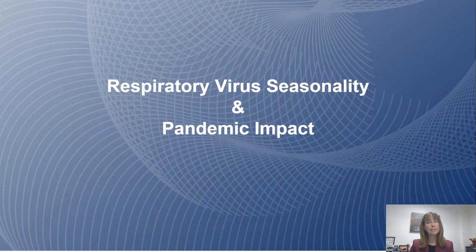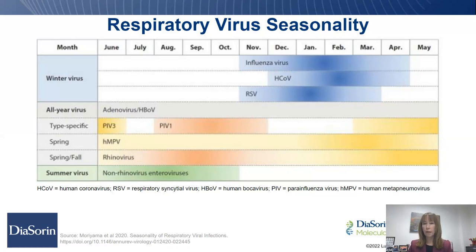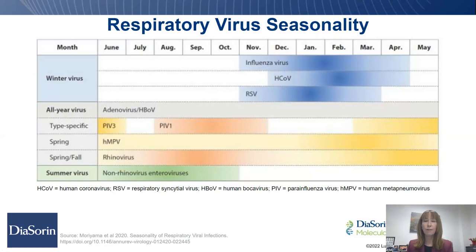Let's dive right into respiratory virus seasonality and the pandemic impact — what impact has COVID-19 had on what we would have seen typically before the pandemic? This figure demonstrates typical seasonality: winter viruses like RSV, flu A, and flu B; summer viruses like non-rhinovirus enteroviruses; year-round viruses like human metapneumovirus, rhinovirus, and adenovirus; and type-specific viruses like parainfluenza. That was the typical seasonality up through the pandemic.